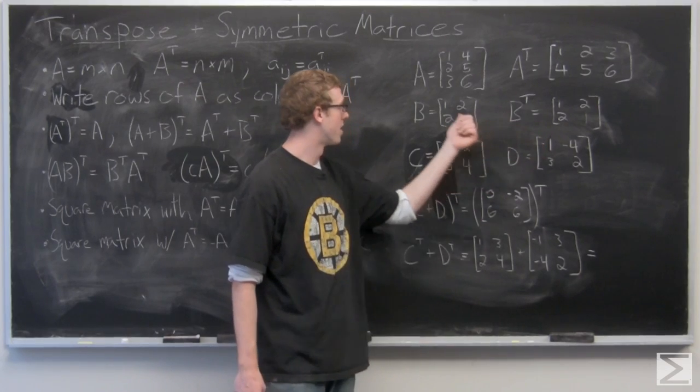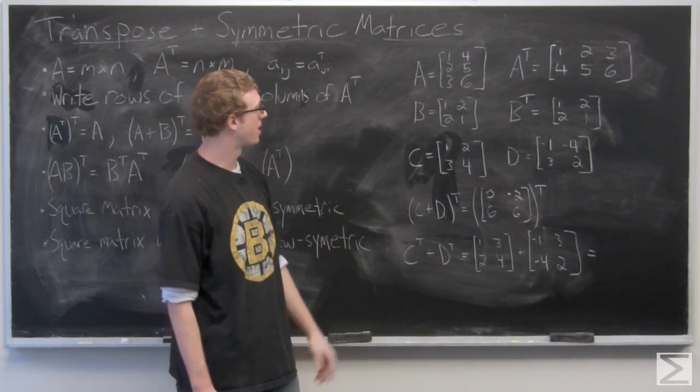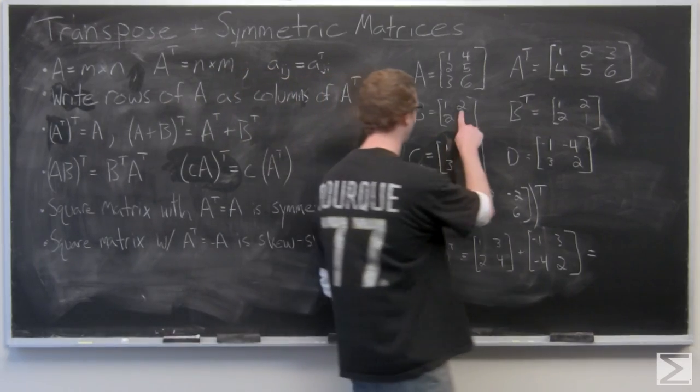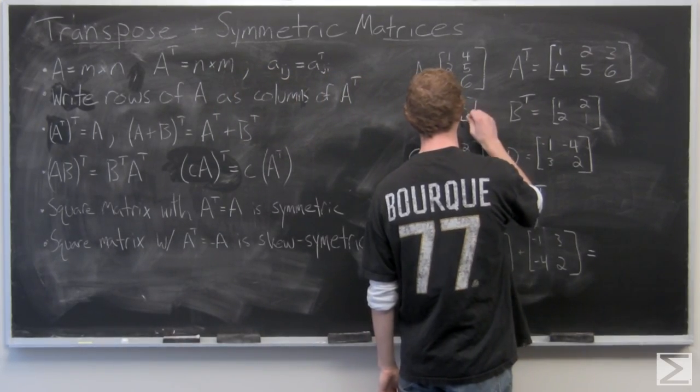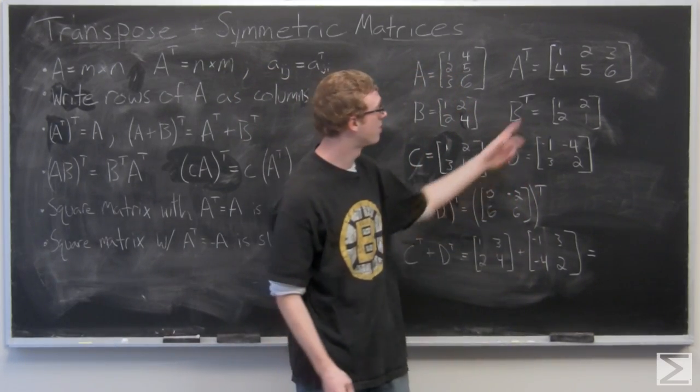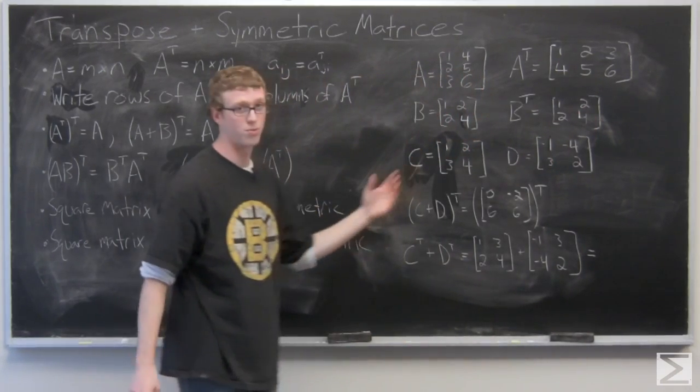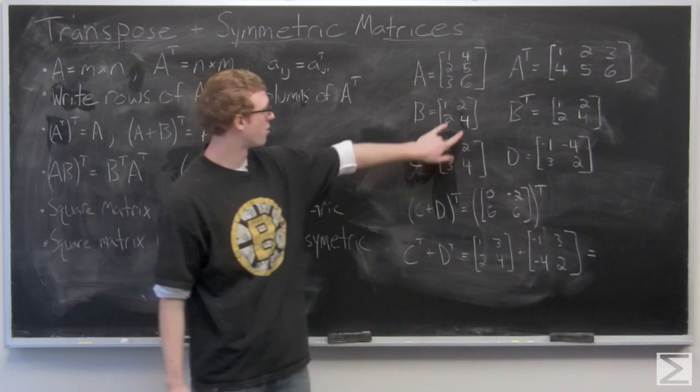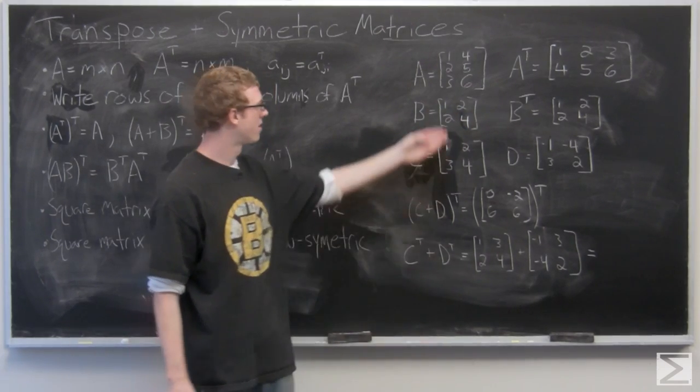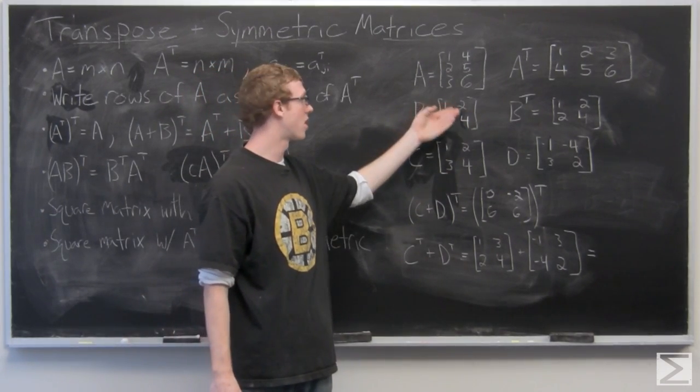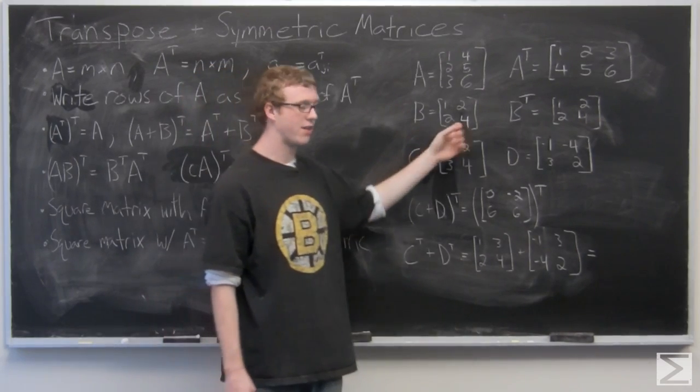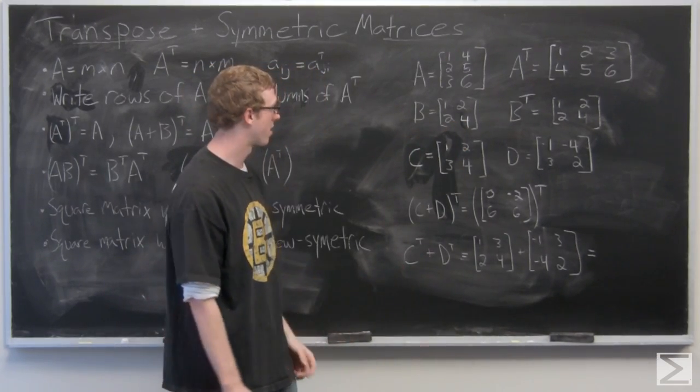Now don't be confused by the ones that are actually not swapping here. If B was 1, 2, 2, 4, then BT would be 1, 2, 2, 4 as well. Those rows don't switch at all because first row, first column becomes first row, first column. Second row, second column becomes second row, second column.